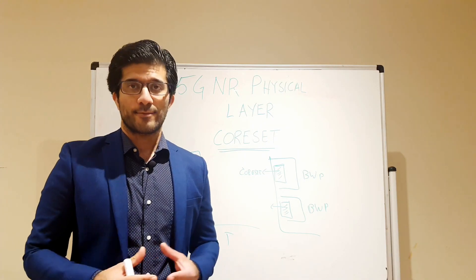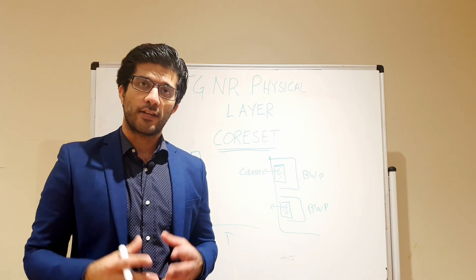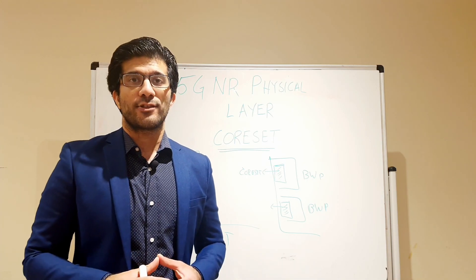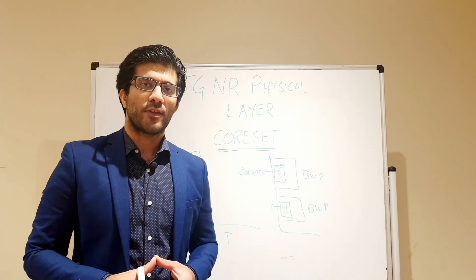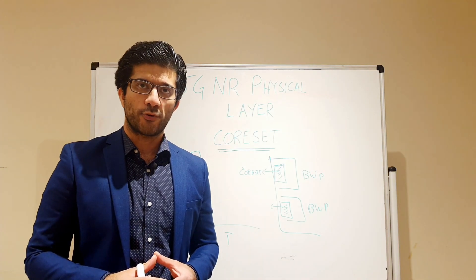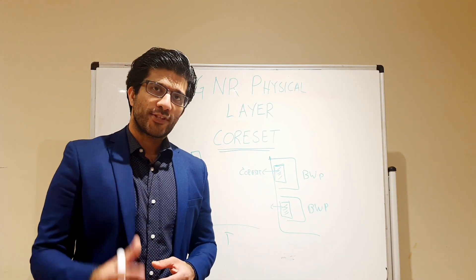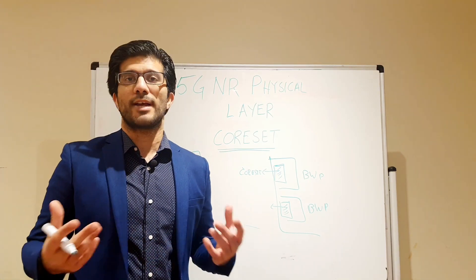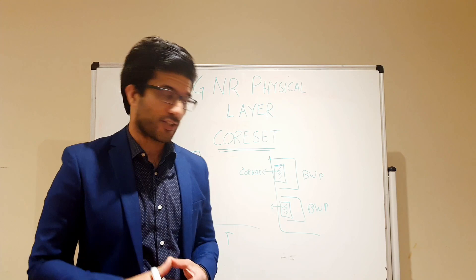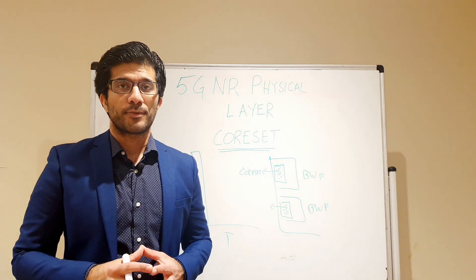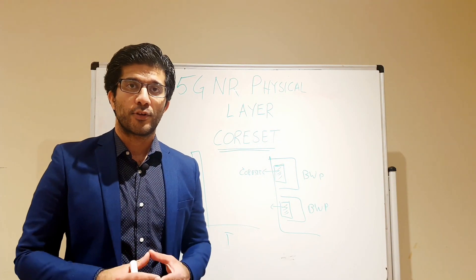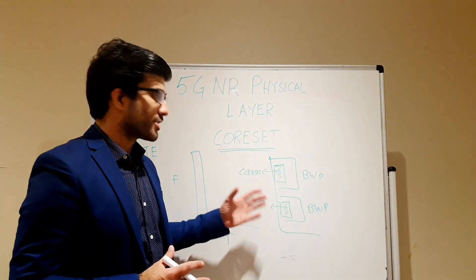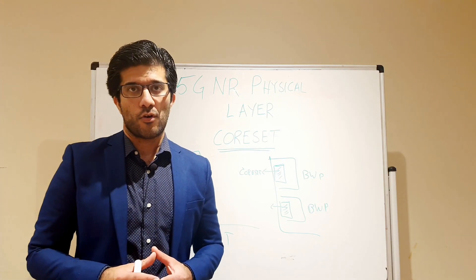The second parameter is the number of time slots it has in a particular subframe — it can be one, two, three, or four. If you remember, in LTE we have the physical format control channel indicator channel which gives us either the first, second, third, or fourth time slots for your PDCCH. Then we have parameters like the number of resource element groups and how they map into this CORESET.